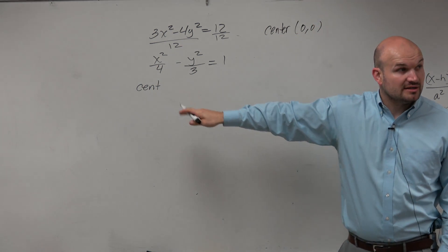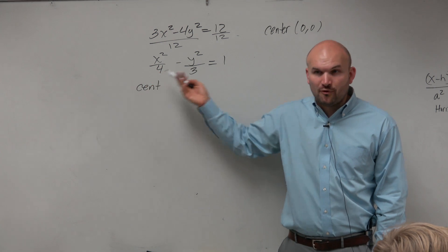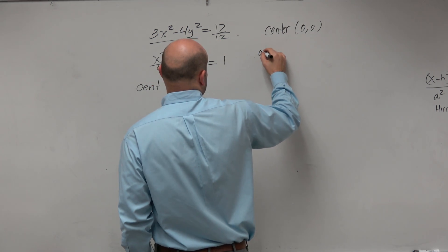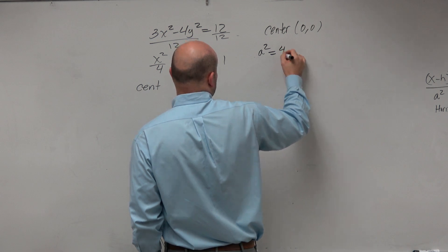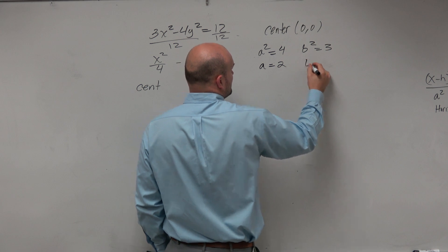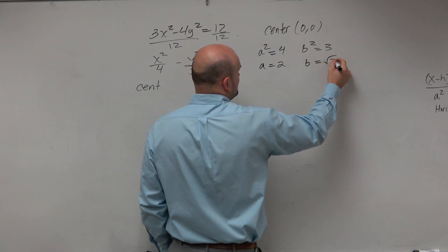a squared is equal to 4, because remember now, in this case, a squared is bigger than b squared, but that's not always going to be the case. But we can say that a squared is equal to 4, and b squared is equal to 3. So a is equal to 2, b is equal to square root of 3.